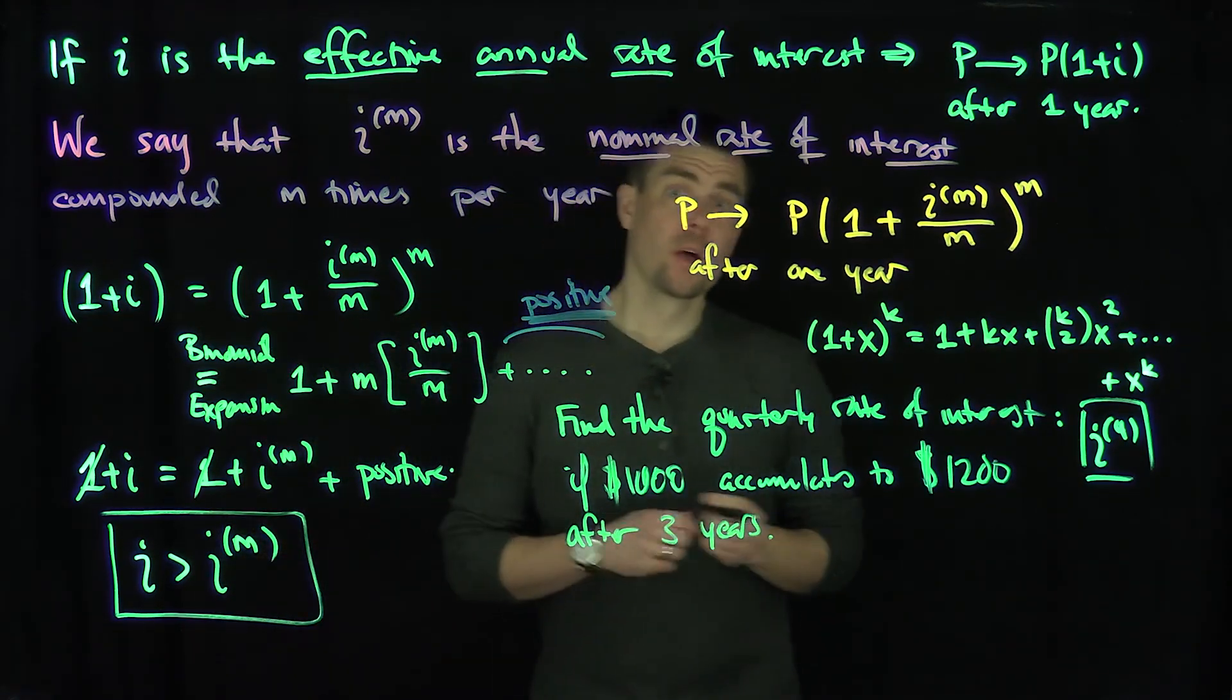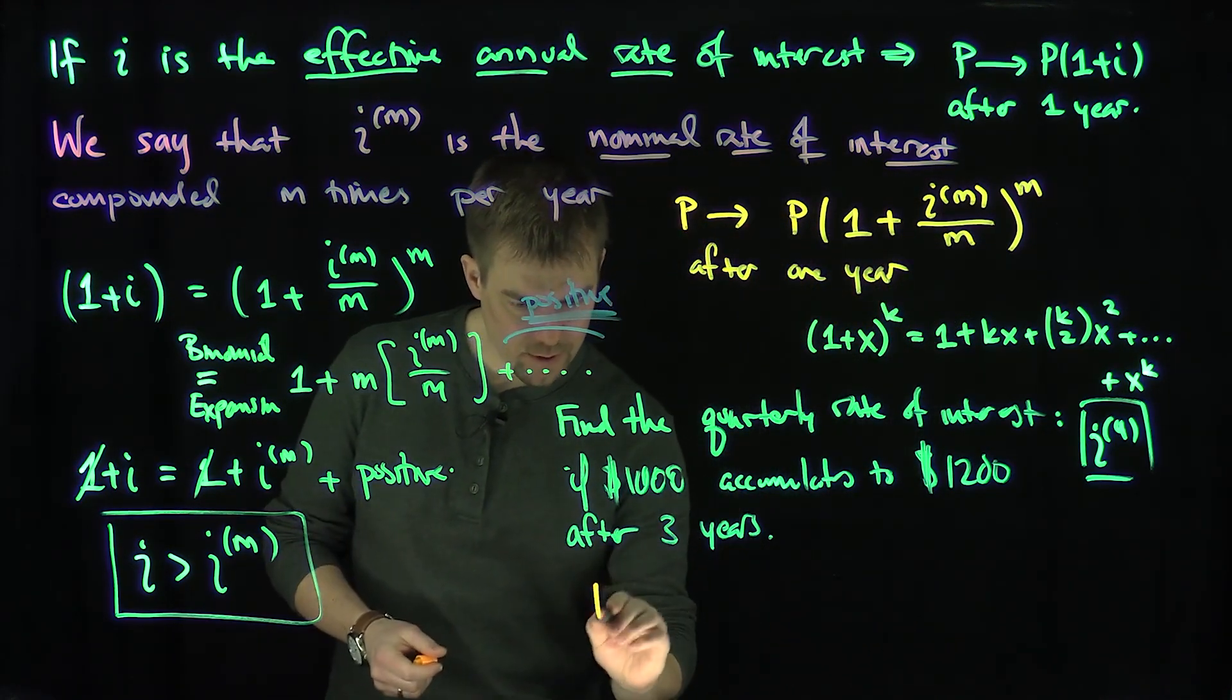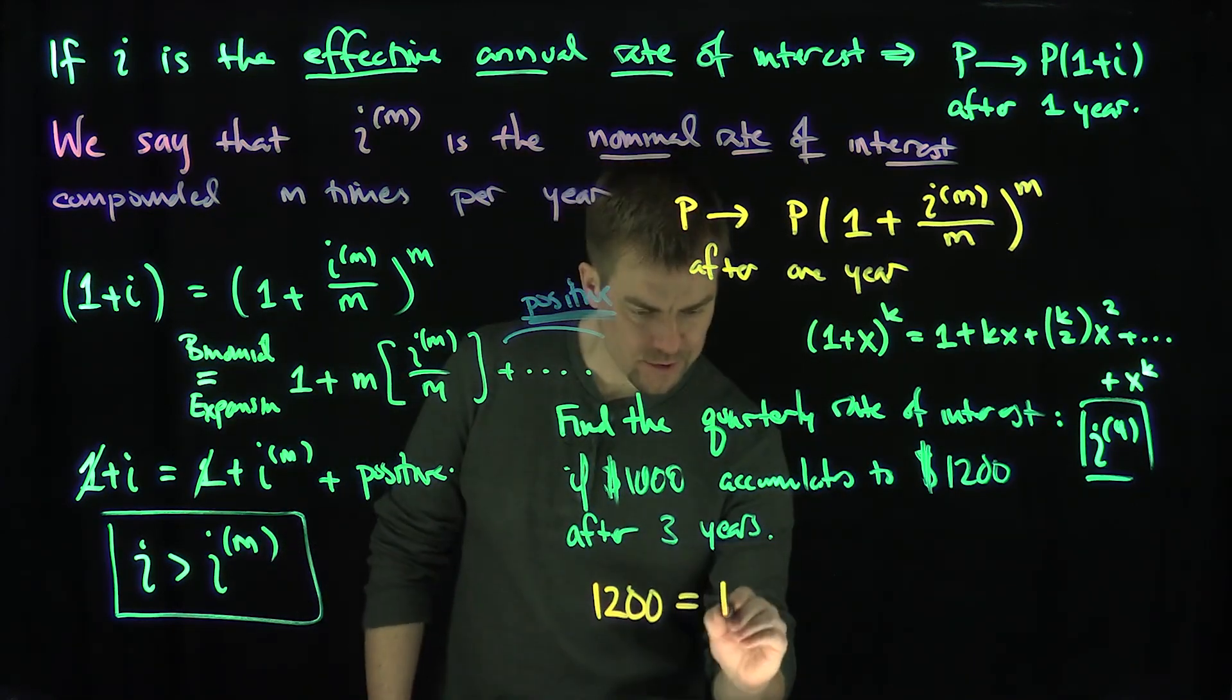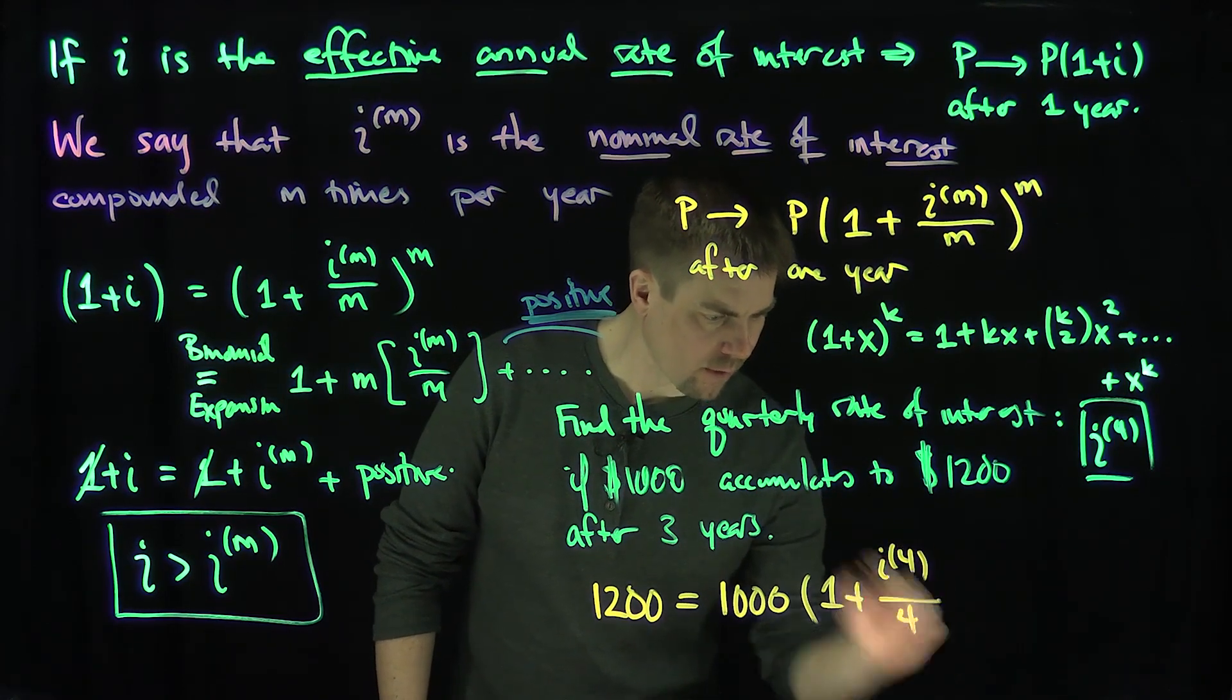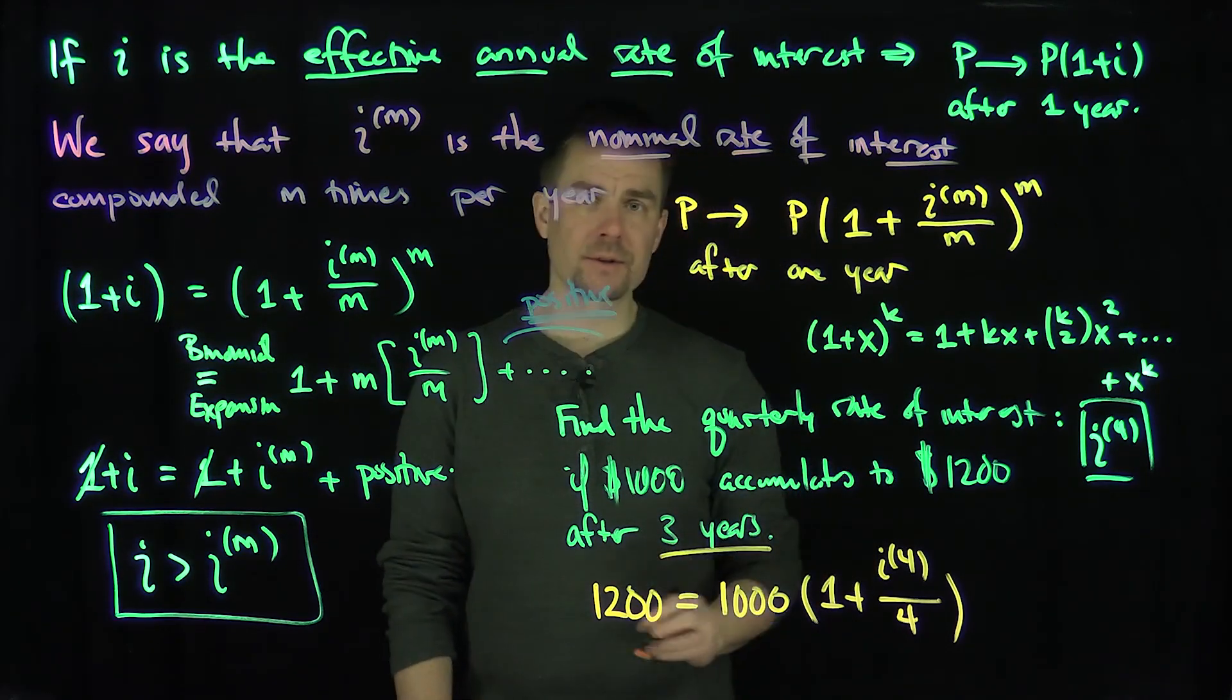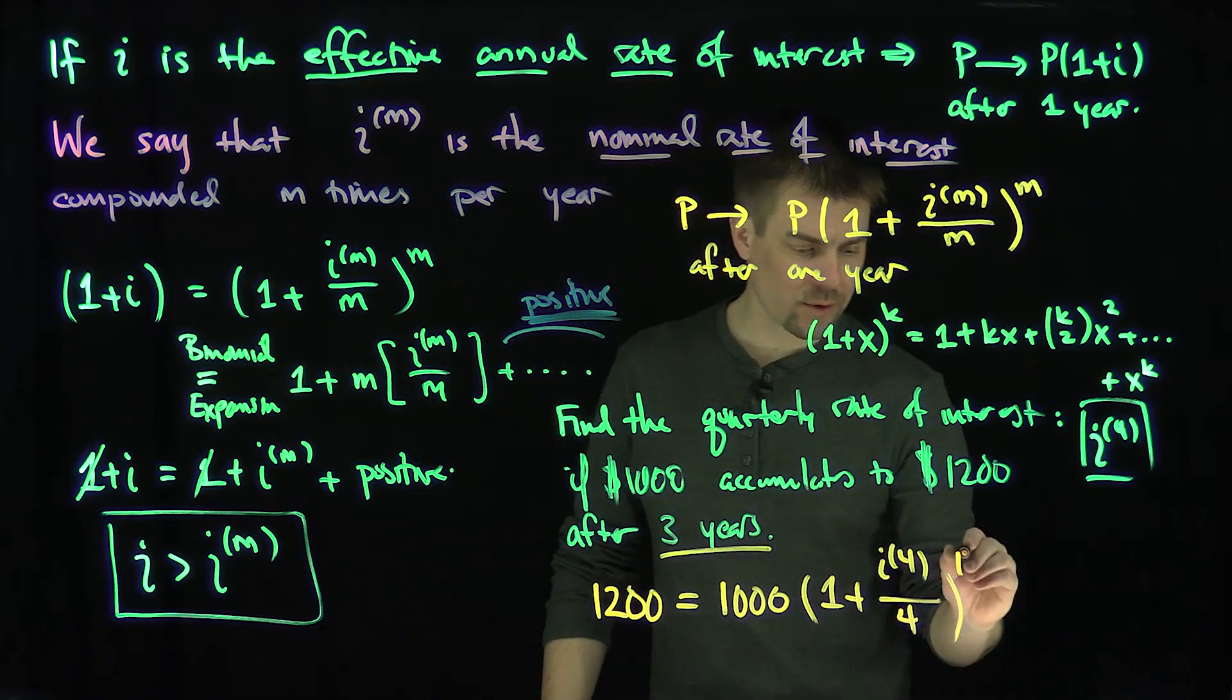So what we'll do is note that 1,200 is equal to 1,000(1 + i_4/4), and it's over three years. There are four quarters in a year, so over three years there's going to be 12 quarters. So I have 12 quarters over here.